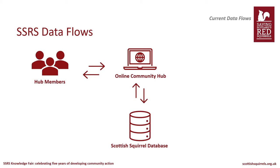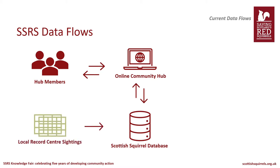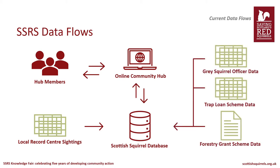Similarly, almost all data imported to the database is reflected on the Hub, with the exception of sightings data we get from local record centres, which remains in the database. Controlled data from grey squirrel officers, trap loan scheme participants in the north, and trapping records from estates in the forestry grant scheme are all imported to the database and reflected on the Hub. We have a really simple process for collecting and collating data into one centralised system, but this wasn't always the case.